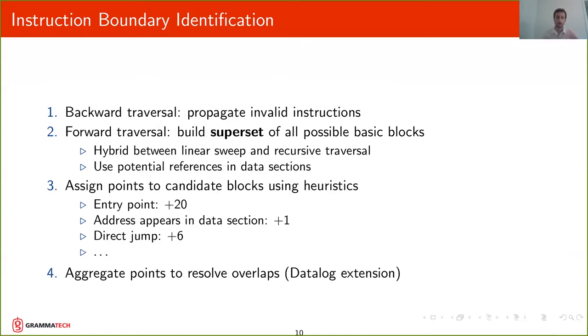So how does our instruction boundary identification work? Well the first thing that we do is this backward traversal that I mentioned that propagates invalid instructions. After that we're going to do a forward traversal that is going to build a superset of all possible basic blocks. This is a hybrid traversal, it's something between linear sweep and recursive traversal. And it's going to try to use all the possible potential references in the data sections as starting points for the traversal. And that way we can be assured that we are going to find all possible basic blocks and we have a superset of all possible basic blocks.